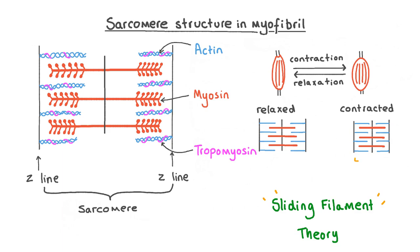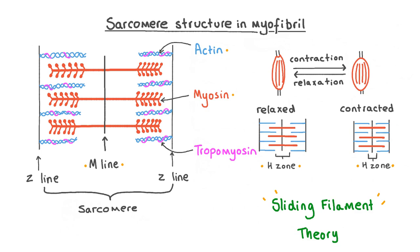In the contracted muscle, the length of the sarcomere has shortened as the distance between the two Z lines has decreased compared to the relaxed muscle. The H zone — a region in the centre of the sarcomere which contains only the thick myosin filament — shortens when the muscle contracts, because the myosin filament is pulling the actin filament towards the M line in the middle of the sarcomere.